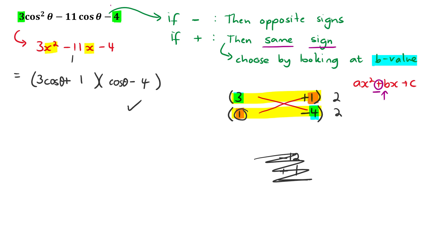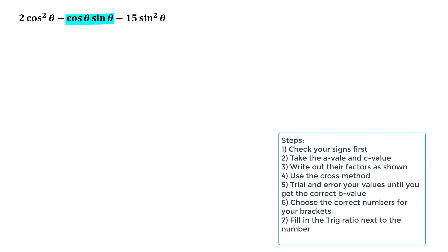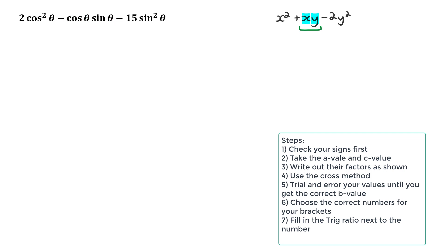Now let's look at a second example, which is more complicated because the middle term contains both sine and cosine. This is similar to the earlier example of x² + xy - 2y² which had two variables in the middle term. Whenever you're dealing with questions like this, focus on that middle term: if you have two different ratios you know each bracket will contain both a cos and a sine.